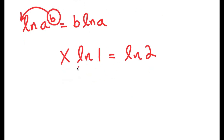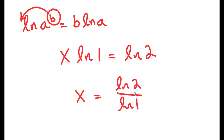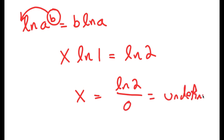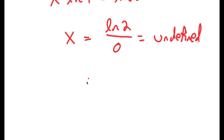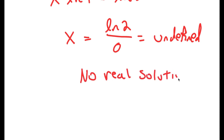You may be thinking we could just divide both sides by ln(1), and x would equal ln(2) over ln(1). However, the only problem with this is that ln(1) is equal to 0. And remember, anything divided by 0 is undefined. So this would be undefined. We know that this equation has no real solution, but it could still have imaginary solutions.